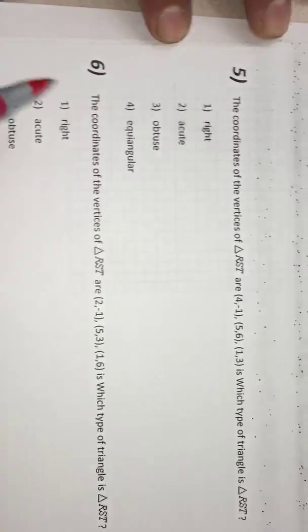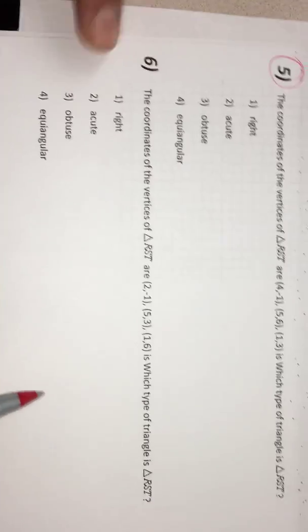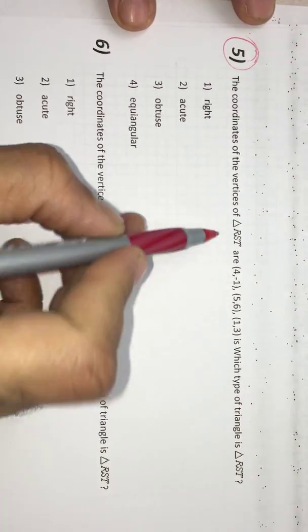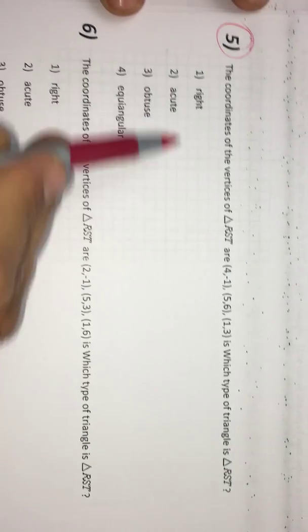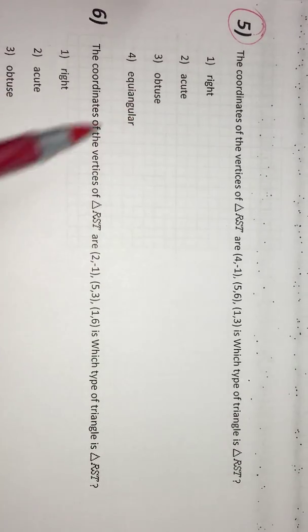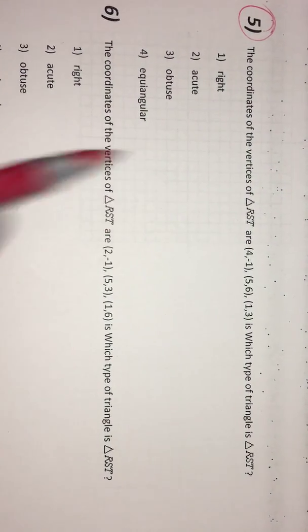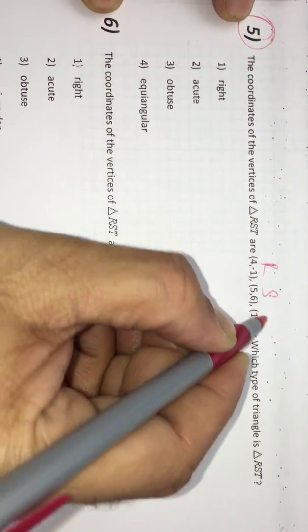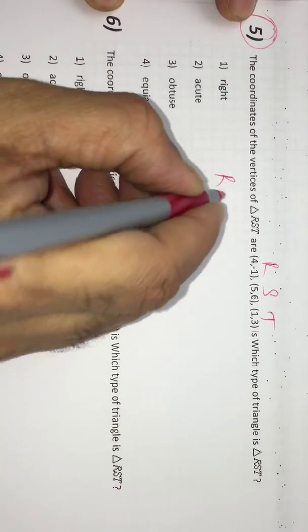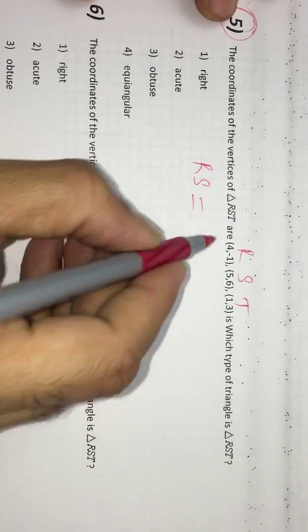Now, I am going to demonstrate the fifth problem of this study guide for the test March 31st. Fifth and sixth are the same type. I do fifth in a similar way, you can do sixth. See what it's saying: triangular RST, is it a right triangle, acute, obtuse, equiangular? For that, we have to first calculate the sides of the triangle.